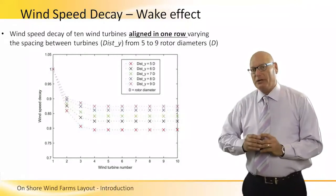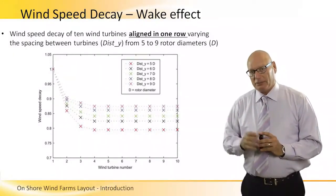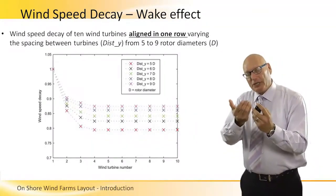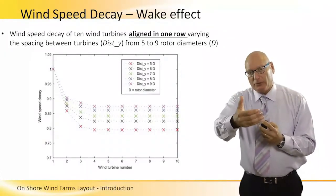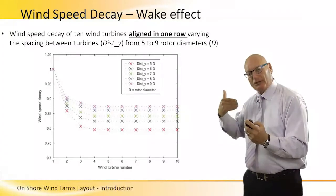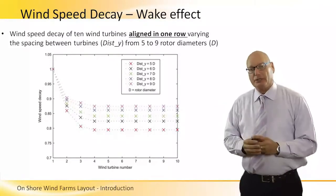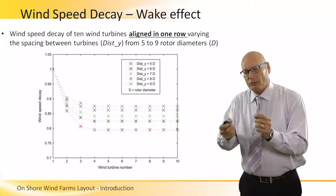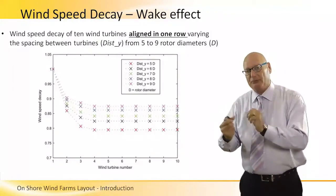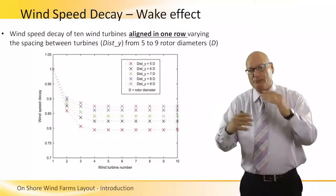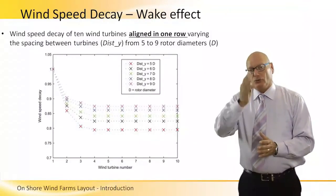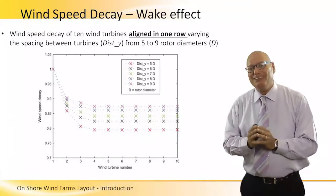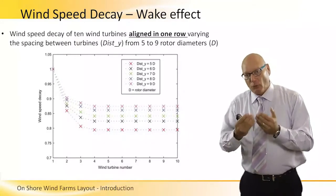We've talked before about the wake effect — the wake turbulence and the reduction in wind speed. The wind coming from the front compared to the wind that goes beyond after the turbine itself. When we have an arrangement of turbines in a chess board configuration — rows and columns at 90 degrees — then we have what we call a wind speed decay because of the wake effect.